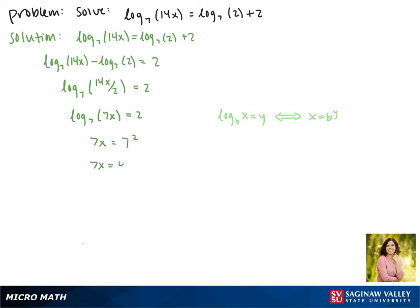7 to the second power is 49, and then solving for x this gives us x equals 7.